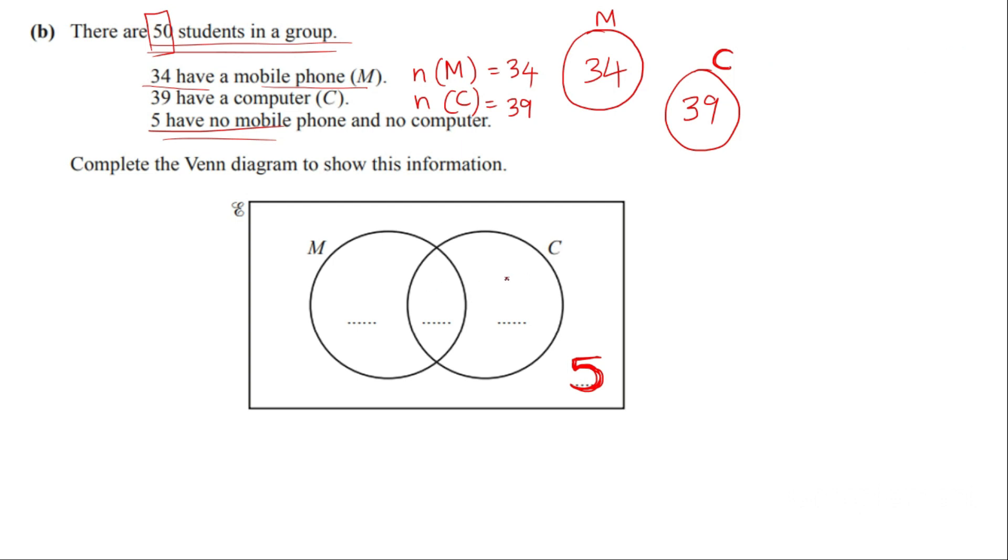I'll be showing you two methods. Let's start with the first one. Since you don't have the number of students who have both a mobile phone and a computer, we start by writing an x there. Now to complete the circle and to fill the data here. You know 34 is the total number of students who have mobile. So x which is the common who have both mobile and computer. So the remaining here should be 34 minus x.